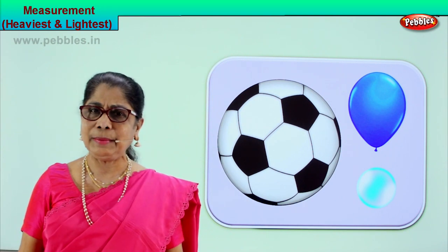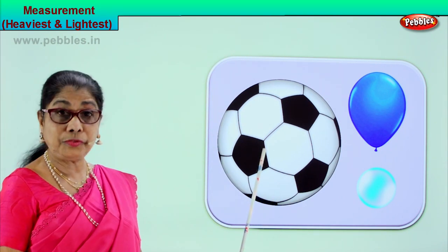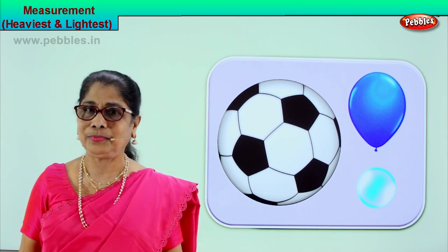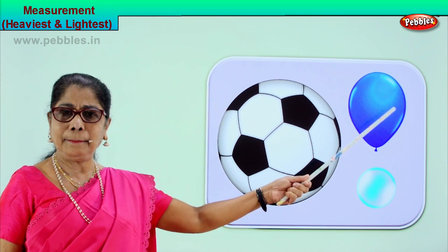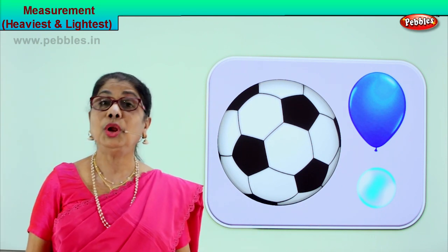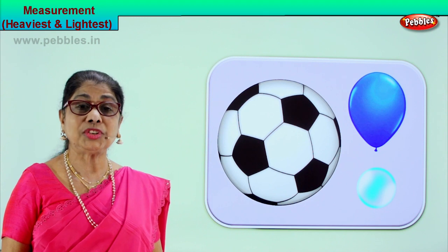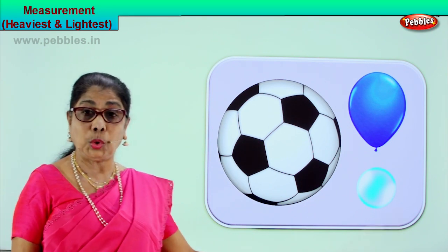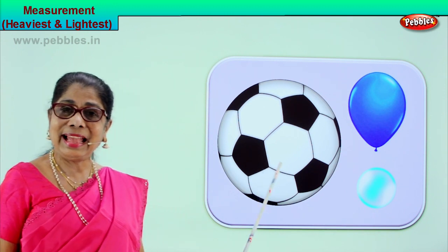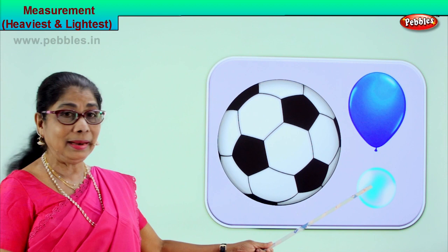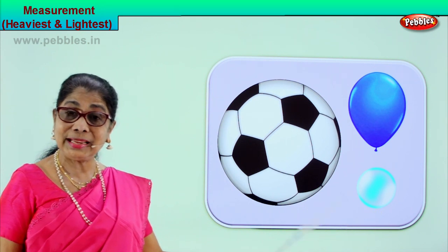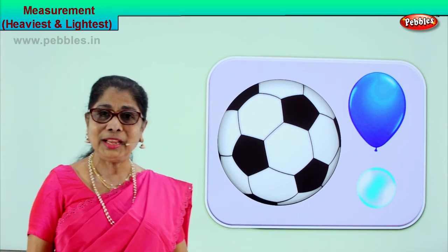Let's take another exercise. Look what we have here. Tell me what are the items on the board here. You have a football, a balloon filled with air, and there is a bubble here. Balloon, bubble, and a football. Look and tell me which is the heaviest of the three things on the board. The football is the heaviest of the three. And which could be the lightest of the three? The bubble will be the lightest of the three. Lightest object, heaviest object. Very good, did you enjoy the exercise?